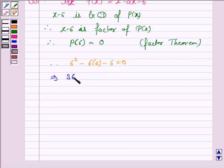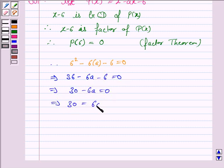So, this implies 36 minus 6a minus 6 is equal to 0 and this implies 30 is equal to 6a. Dividing both sides by 6, we have a is equal to 5.